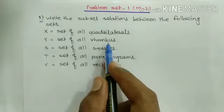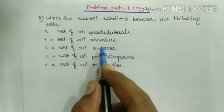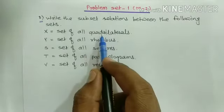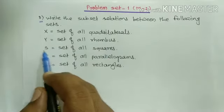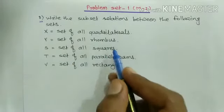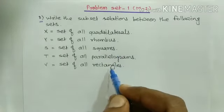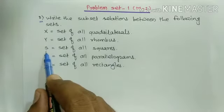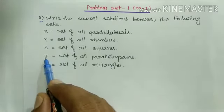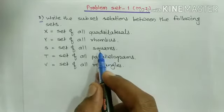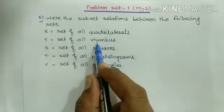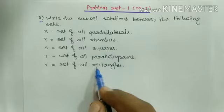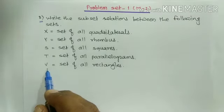X is the set of all quadrilaterals. Rhombus, squares, parallelograms, and rectangles — all these are quadrilaterals, that's why all these sets are the subset of X. Then rhombus, squares, and rectangles are all parallelograms, that's why sets Y, S, and V are the subset of T. Every square is a rhombus, so S is the subset of Y. Every square is a rectangle, so S is the subset of V also.